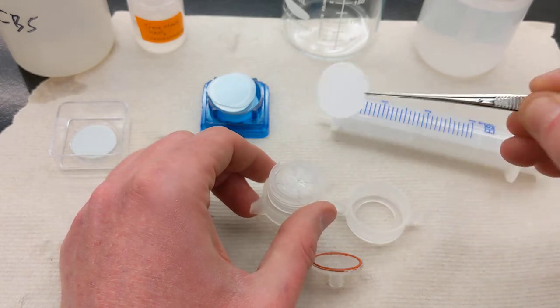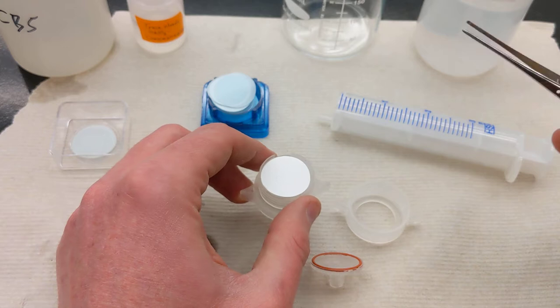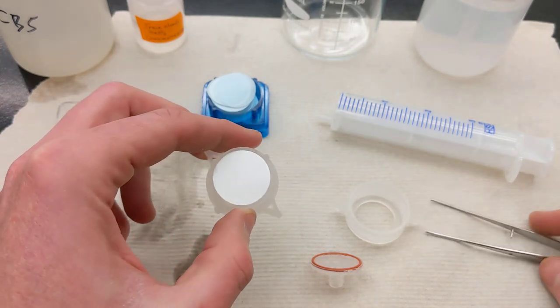Take this filter. If it's the same on both sides, it doesn't matter, there's no directionality. If there are grids on one side, then the grid face goes up. You'll just place that in here.